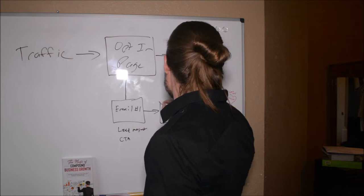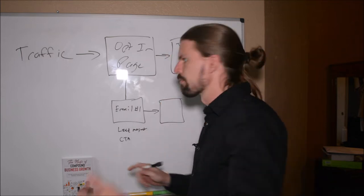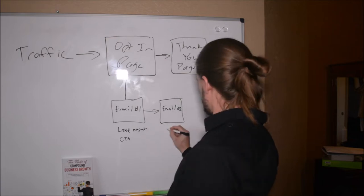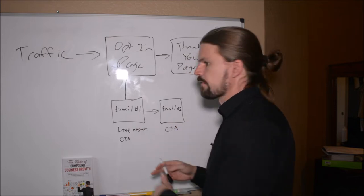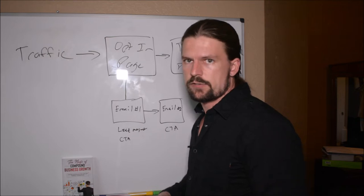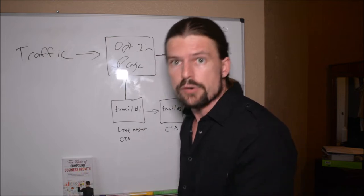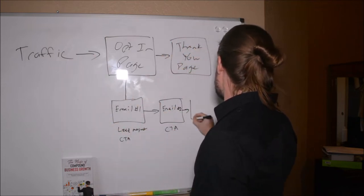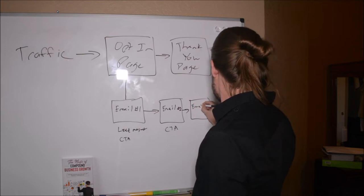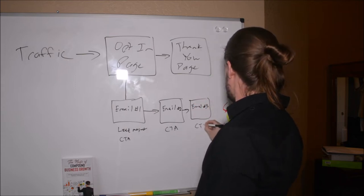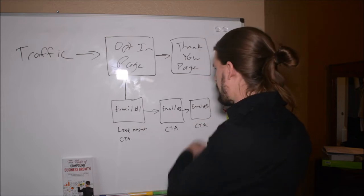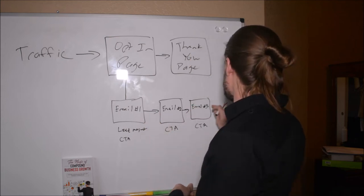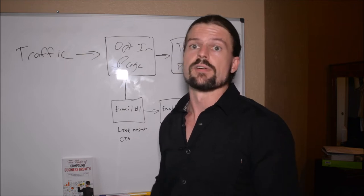Once we have their email address we can just keep on emailing them forever, or until they unsubscribe. I would separate these by a day, or two days or three days. Email number two is going to be some content — something that gets them to open it and gets them interested, and then at the end a call to action. You just keep doing it again with a little bit of a different track, ending with a call to action. That's the whole funnel — pretty simple. You can keep on sending emails forever after that.